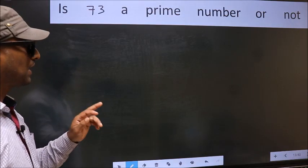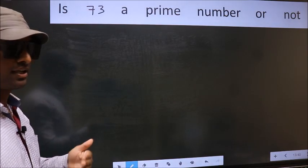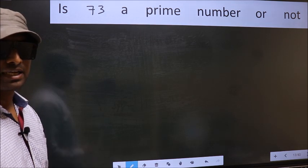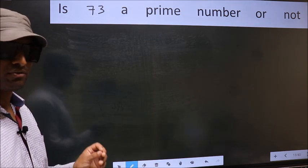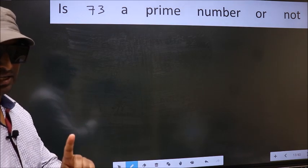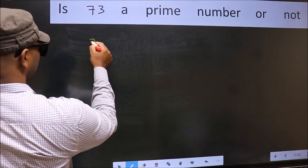Is 73 a prime number or not? To check whether the given number is prime or not, for that step 1. Given number is 73.